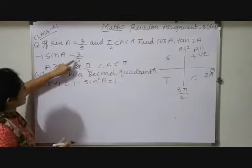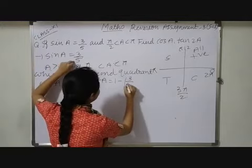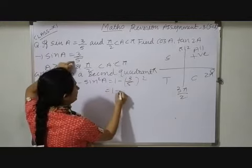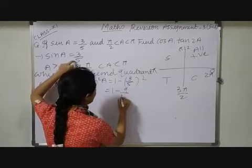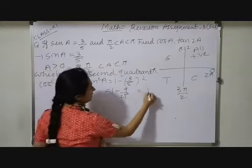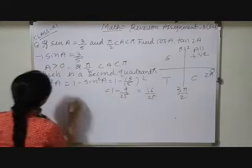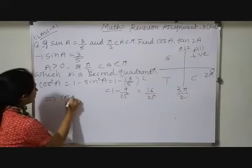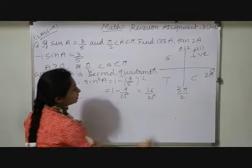Which is equals to 1 - (3/5)². Which is equals to 1 - 9/25. So that is (25 - 9)/25, which will be 16/25. So which implies cos A—that is, here I have to take its root.